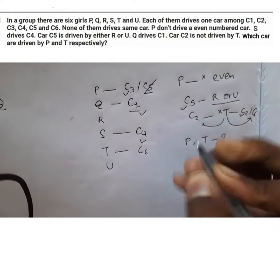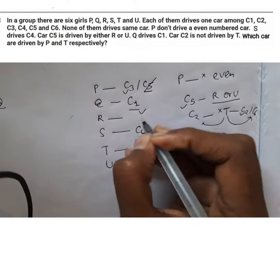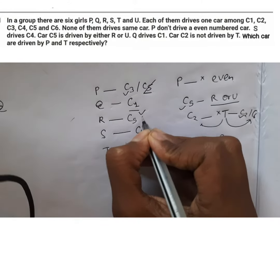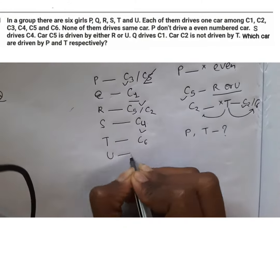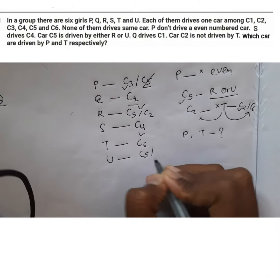So, T is left with C6. Now, R still has two options, C5 and C2. And U also has two options, C5 and C2.